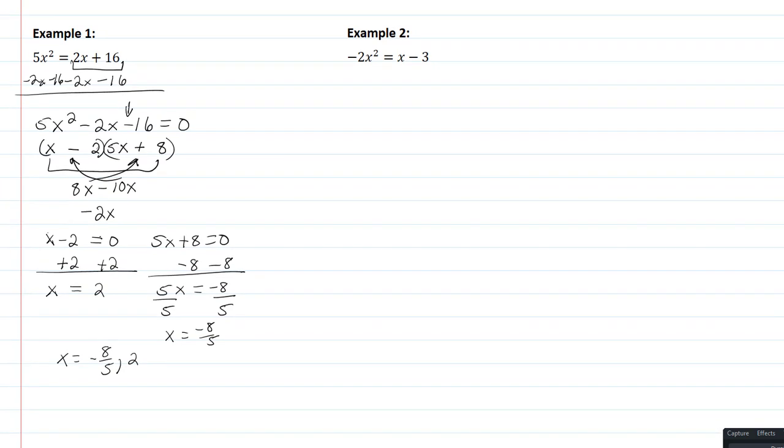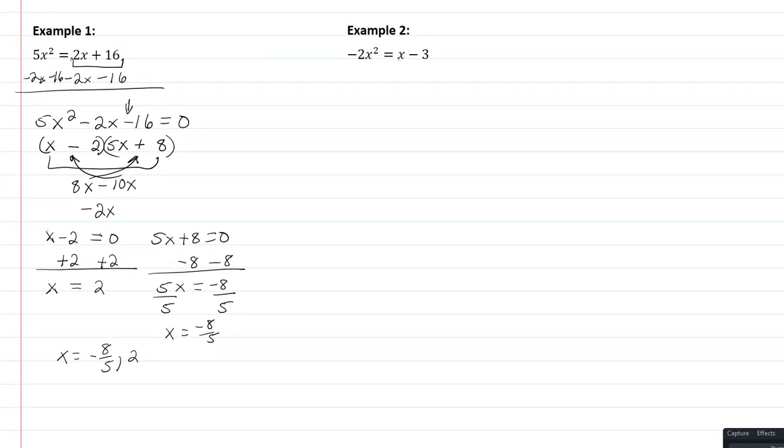Let's look at example 2. First, I want to move terms to one side. Actually, it might be easier to move this over so it's positive when we factor. We'll add 2x² to both sides. This gives 0 = 2x² + x - 3. It doesn't matter what side the zero is on.